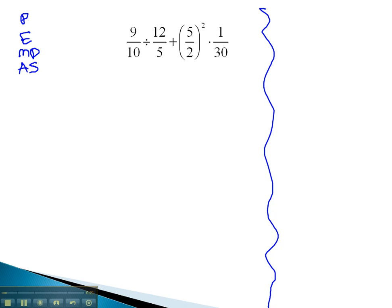So let's take a look at this problem and see if we can simplify it using the order of operations. There aren't really any parentheses because we can't simplify 5 halves at all, so next we'll move on to exponents.